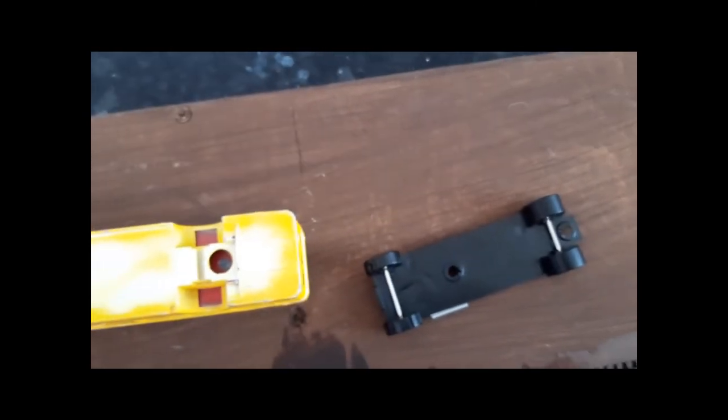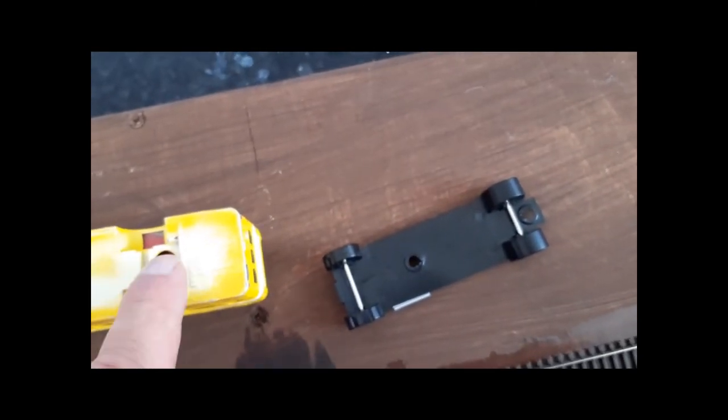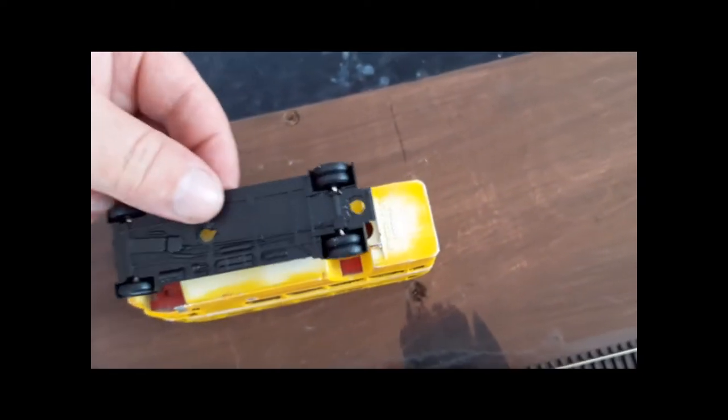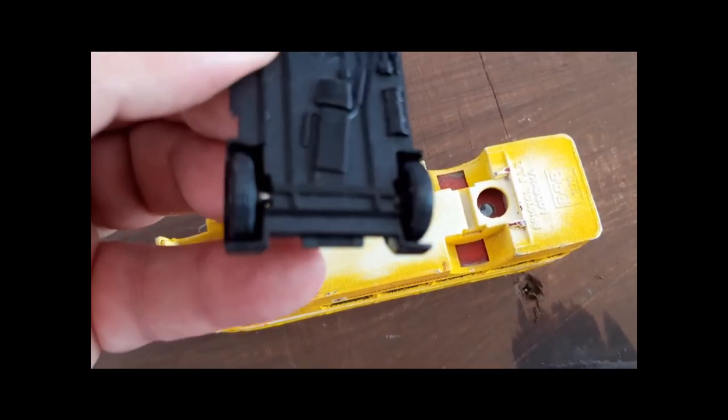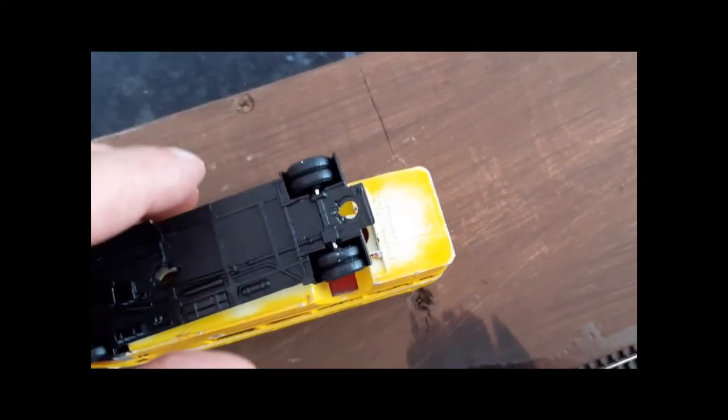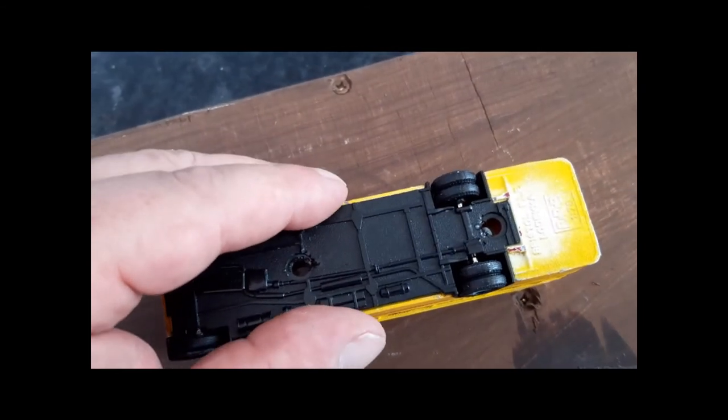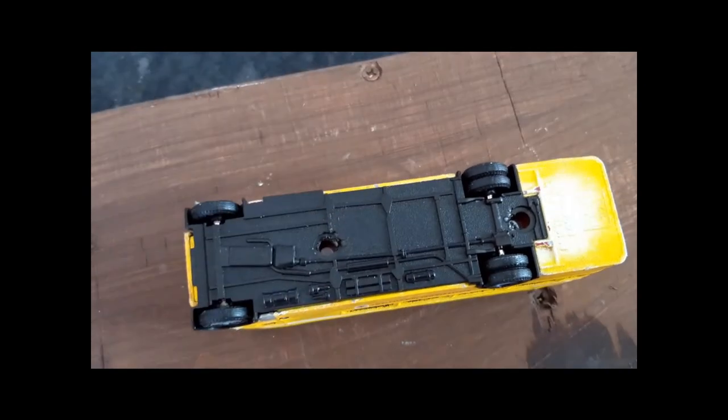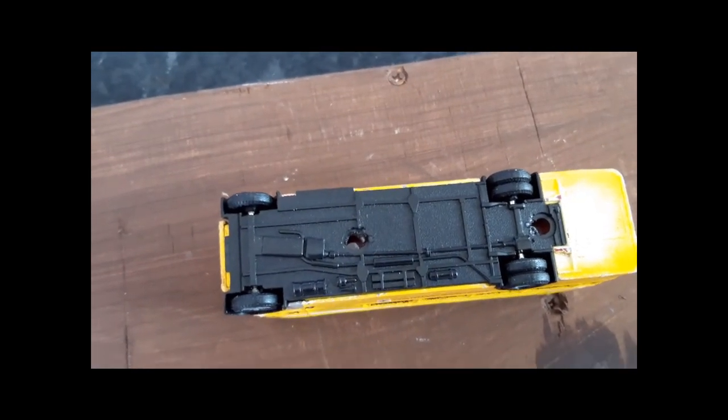We'll turn the vehicle onto its roof, apply some glue, get our chassis and make sure it's the right way round, of course. There's a slight lug on the front of the chassis just there. You need to get that located and then sit the rest of the chassis down and apply.